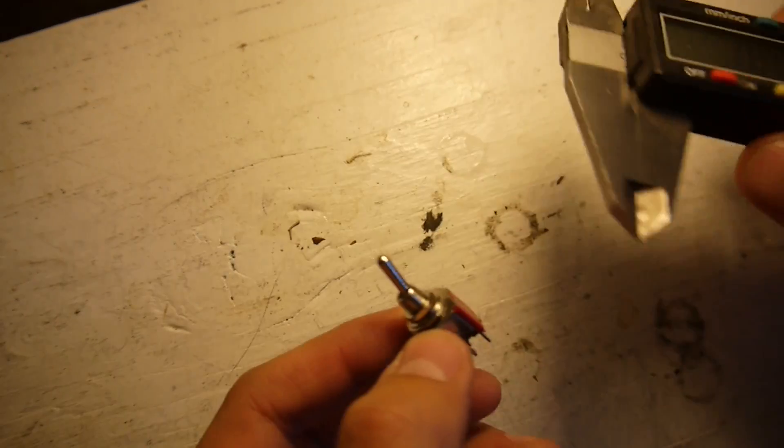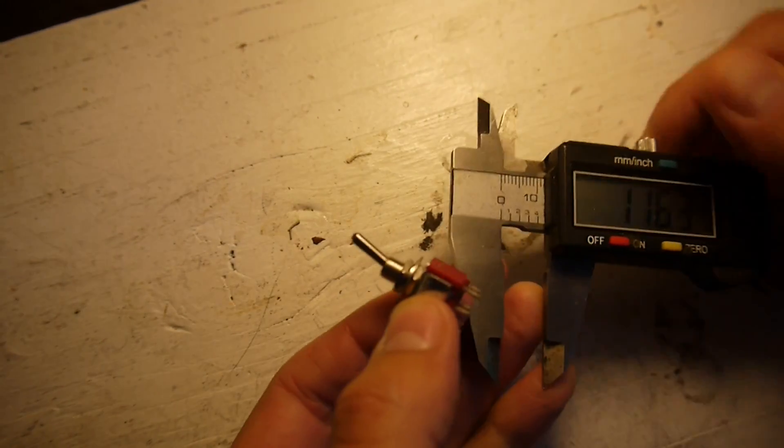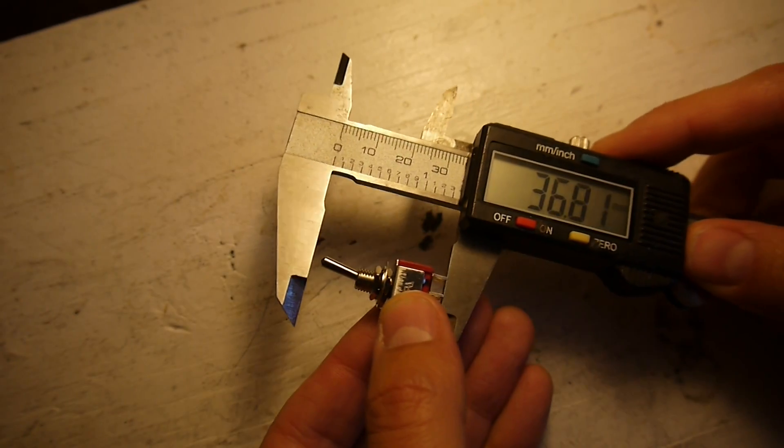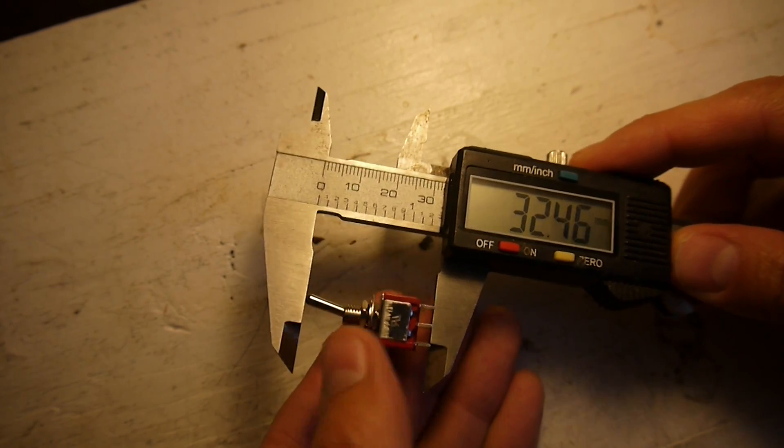Alright, so here are the same casing for most of the switches that I sell. Let's just do the overall length. It is about 32.5 millimeters.